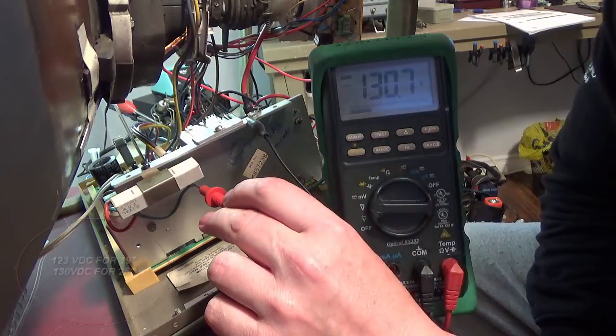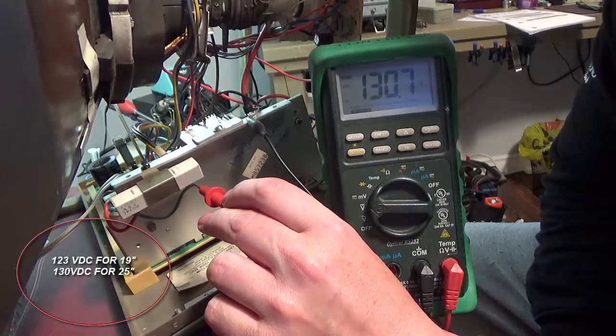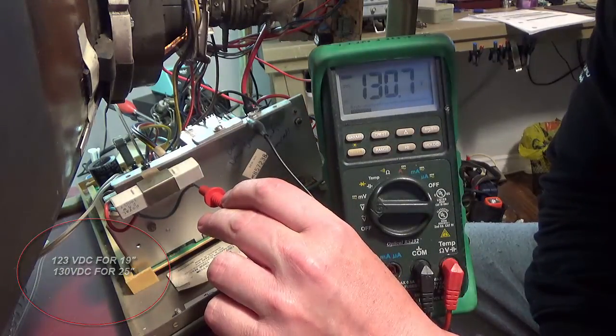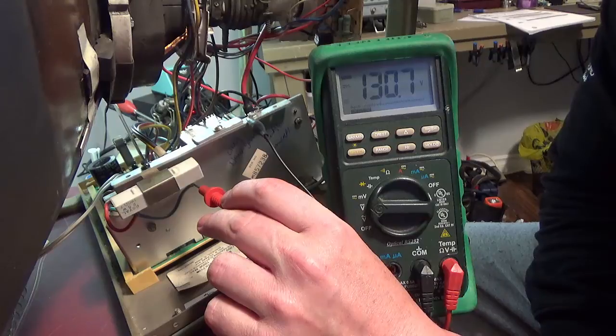For a 25-inch, that's pretty normal. It's kind of what we want to see. So that's how you test your B-plus on a K7000.